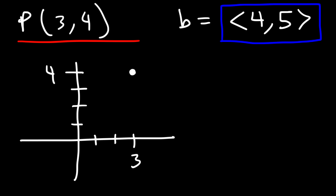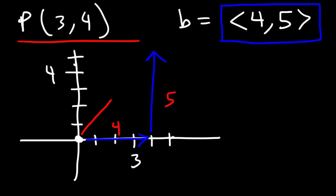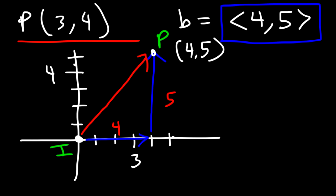A vector, on the other hand, is different. To graph vector B ⟨4, 5⟩, we start from the origin, travel 4 units to the right — that's the x-component — and then go up 5 units. Vector B starts from the initial point at the origin (0, 0) and ends at the terminal point, which is (4, 5). So vector B has an x-component of 4 and a y-component of 5.